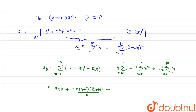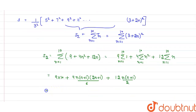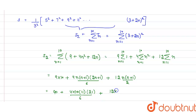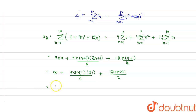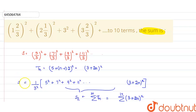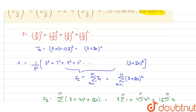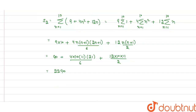We write 4 × 10 × 11 × 21 / 6 for the n² term. The sum of first n natural numbers is n(n+1)/2, so we write 12 × 10 × 11 / 2 for the n term. Substituting n = 10, this gives: 90 + 4 × (10 × 11 × 21 / 6) + 12 × (10 × 11 / 2), which evaluates to S₂ = 2290.